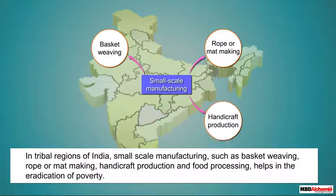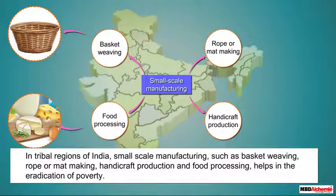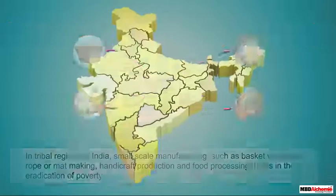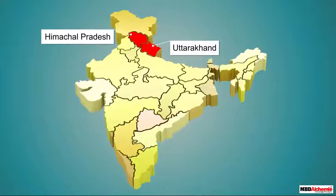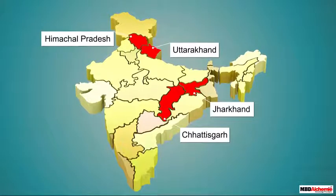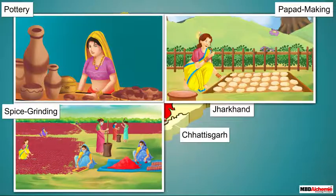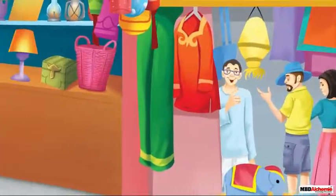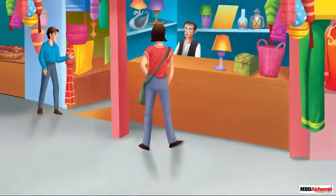In many areas, small-scale manufacturing such as basket weaving, rope or mat making, handicraft production, and food processing helps in the eradication of poverty and raises self-dependency — especially in the tribal regions of Uttarakhand, Himachal Pradesh, Jharkhand, and Chhattisgarh. Pottery, pickle and papad making, spice grinding, and bamboo craft support local tribals and also grab a huge market in India and abroad.